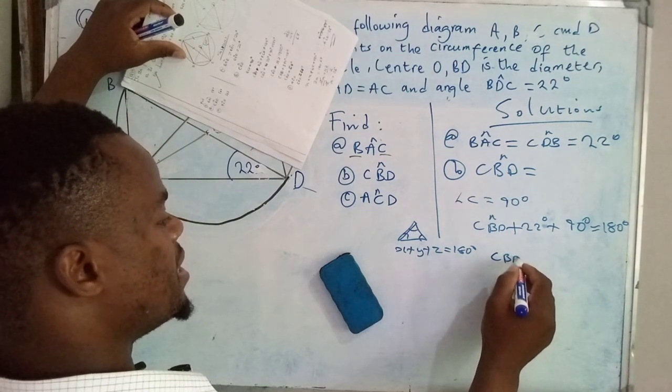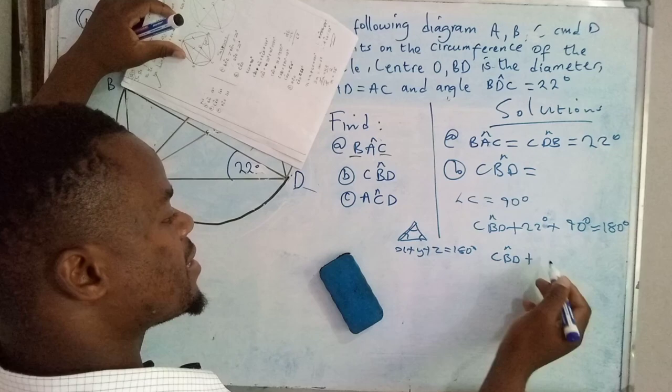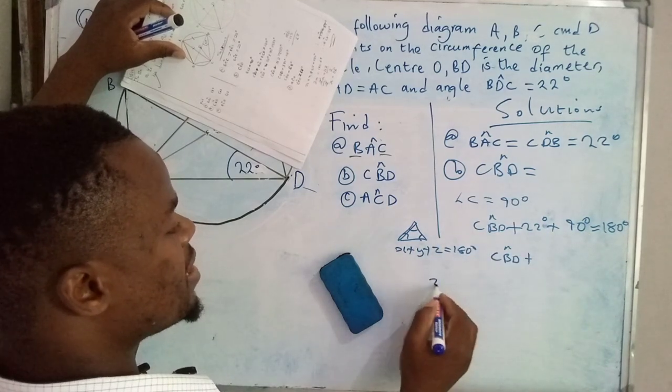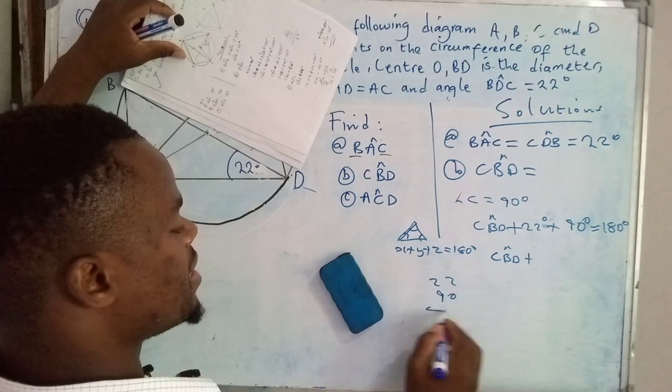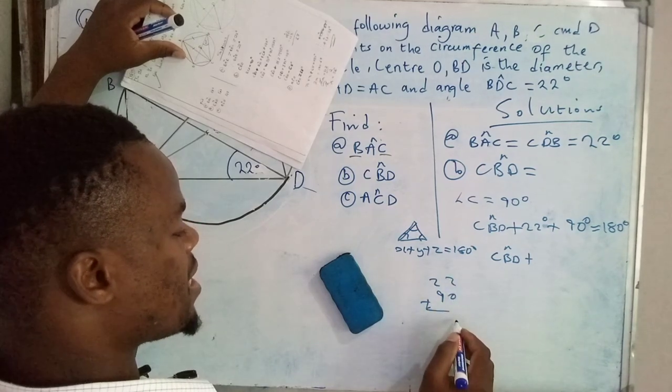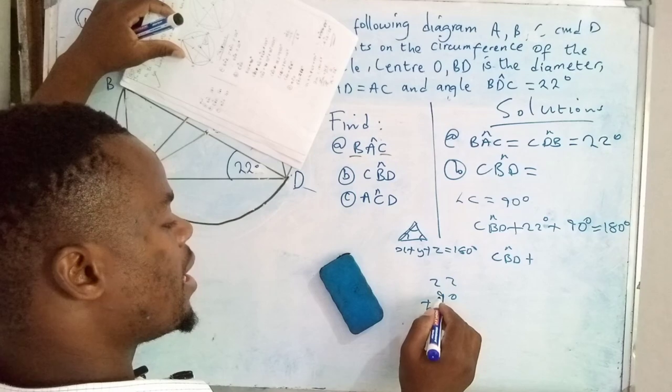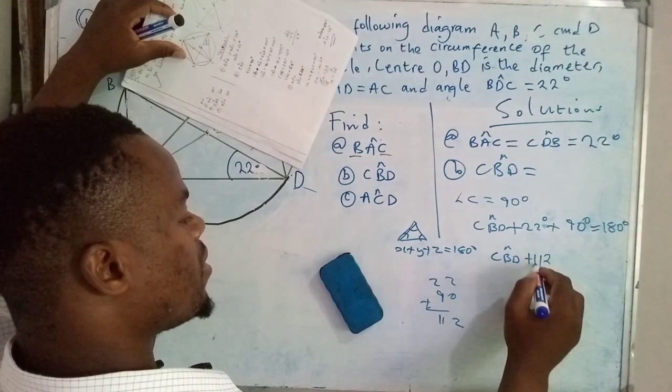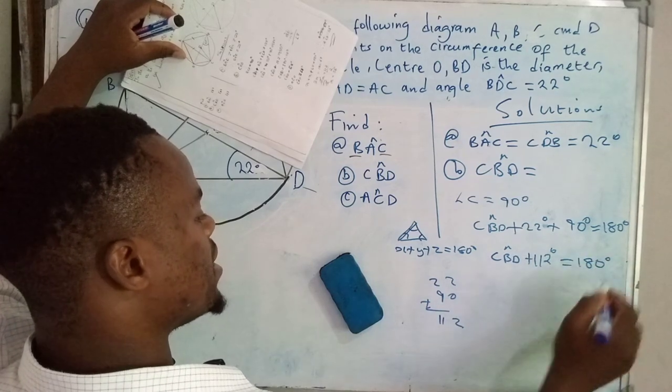So we can say CBD plus 22 degrees plus 90 degrees equals 180. So CBD plus—I'm adding them vertically—2 plus 0 is 2, 9 plus 2 is 11, so that's 112 degrees equals 180.